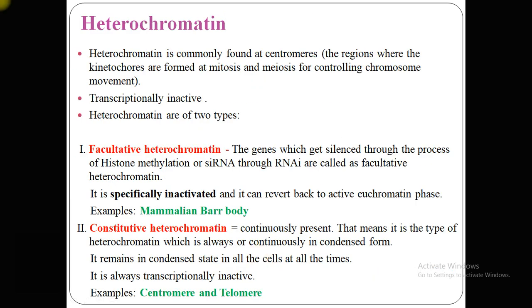Heterochromatin is commonly found at the centromere. In the chromosome you can see the centromere region where the kinetochores are formed during mitosis and meiosis for controlling chromosome movement in the cell. These regions are transcriptionally inactive.